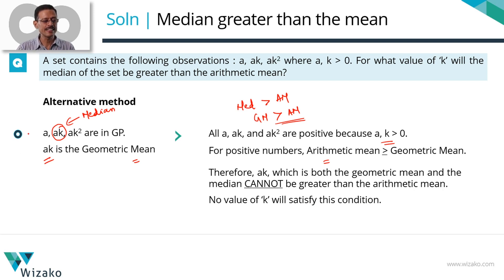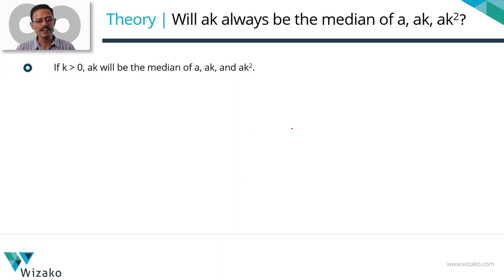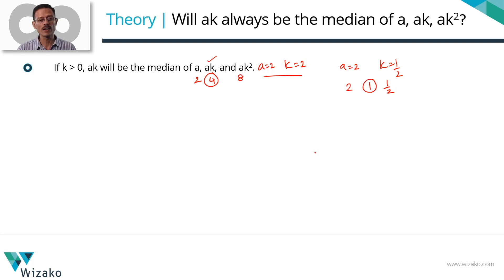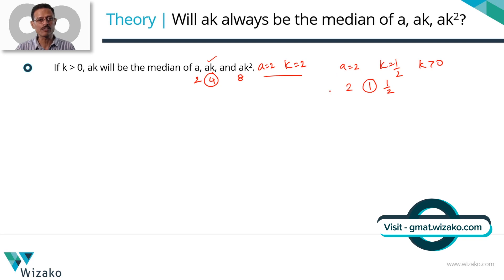Now let's look at a bit of theory. I said AK is the median because K is positive. One way to verify: pick K = 2 and A = 2. The values of A, AK, AK² become 2, 4, and 8. In ascending order: 2, 4, 8 — the middle number is 4, which is AK. Now check with A = 2 and K = ½. The values are A = 2, AK = 1, AK² = ½. Ascending order: ½, 1, 2 — the middle number is 1, which again equals AK. So whether K is 2, ½, between 0 and 1, an integer, or a decimal fraction, it doesn't matter — as long as K is positive, AK will be the median. If K is negative, AK will not be the median; it will be either A or AK².